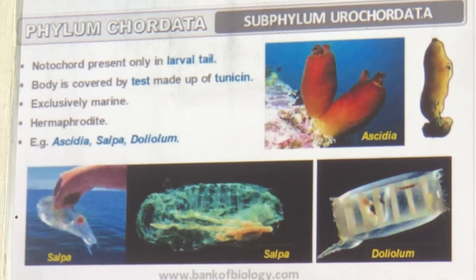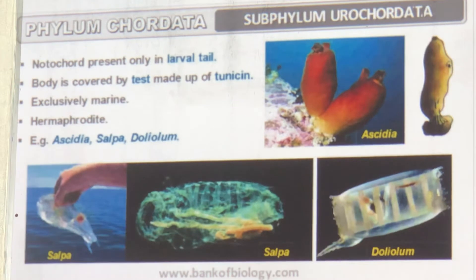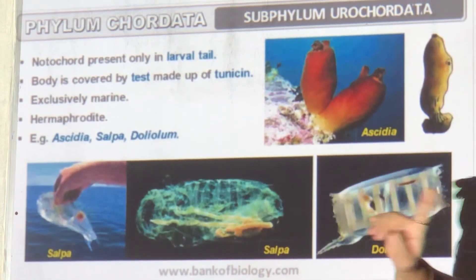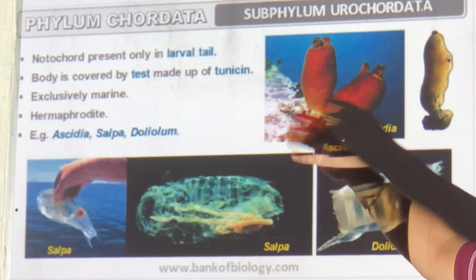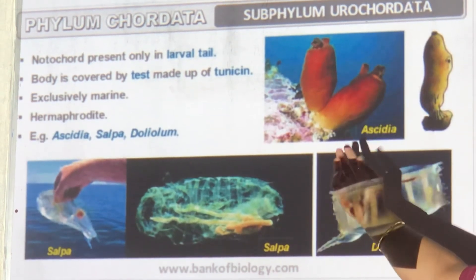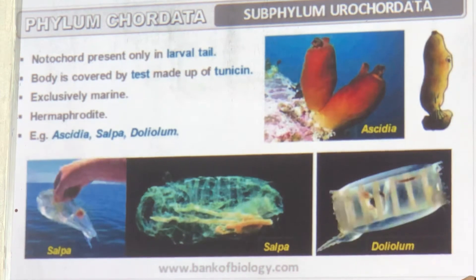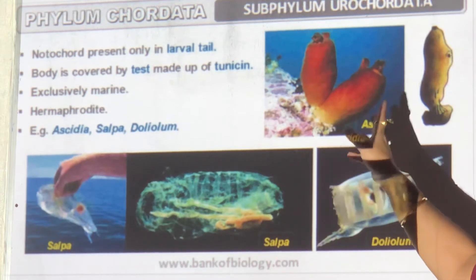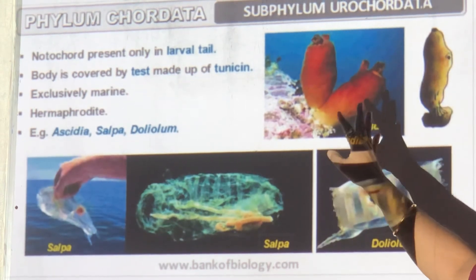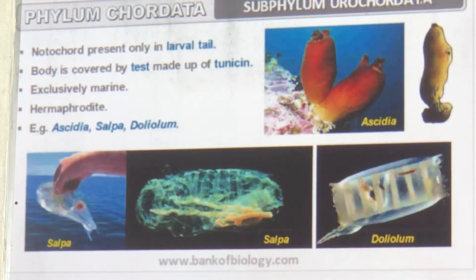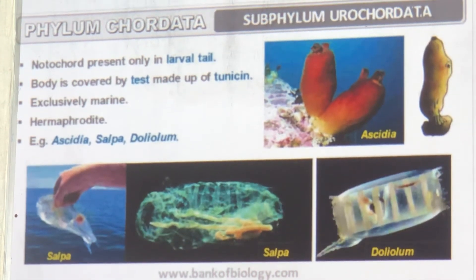First, Urochordata. Only in the larval tail is the notochord present; then it gets lost, but it was there. The body is covered by a tunic made of tunicin — you have skin and a test on top, like a seed cover. They are found only in seawater and are hermaphrodites — male and female in the same animal. Examples: Ascidia, Salpa, and Doliolum.